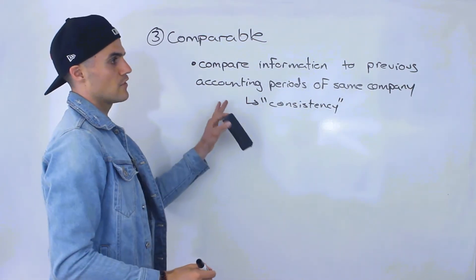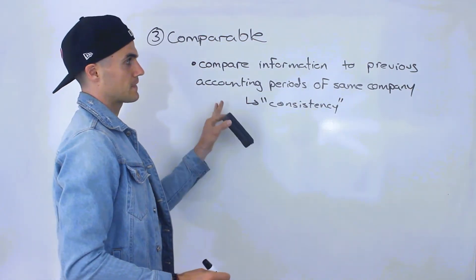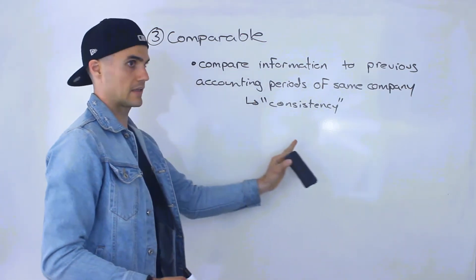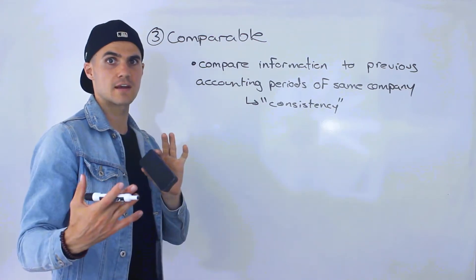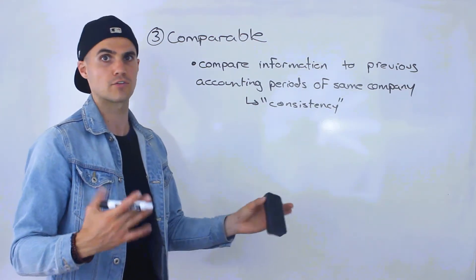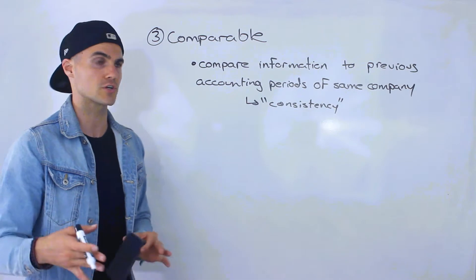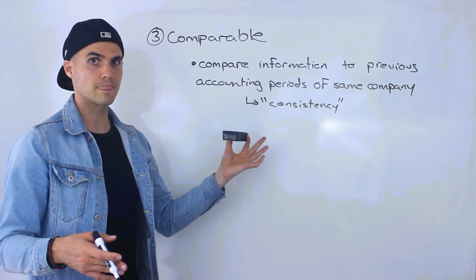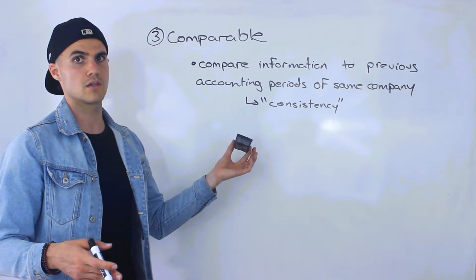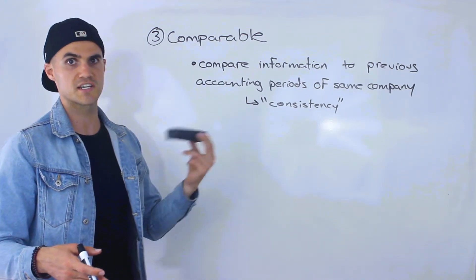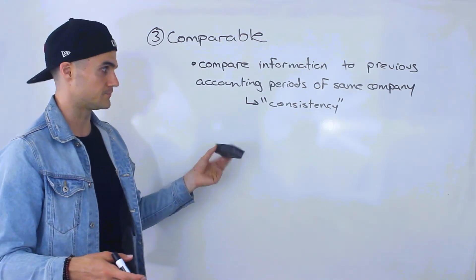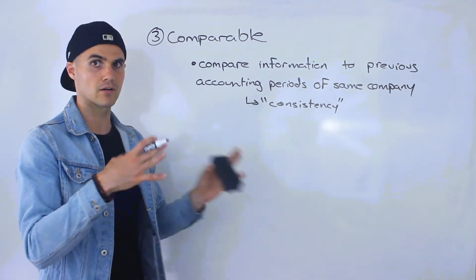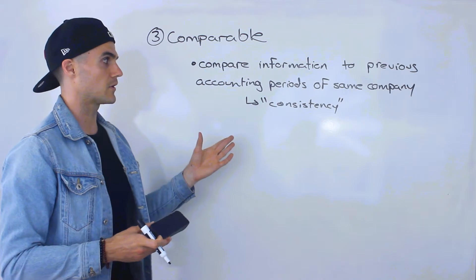So a good example of this is that the financial information in this period and then in the previous periods, they should all be stated in the same currency. Let's say that you have a company and you're working in different countries, that's actually going to be one of the assumptions we'll go over in future videos. The unit of measure or stable monetary unit assumption, it should be stated in the same currency so you could compare to previous accounting periods.